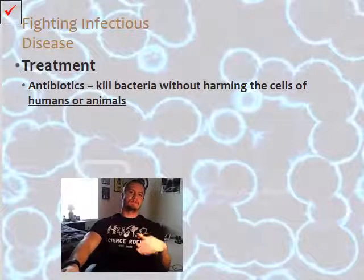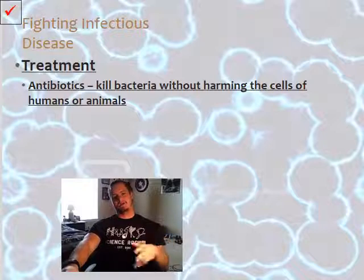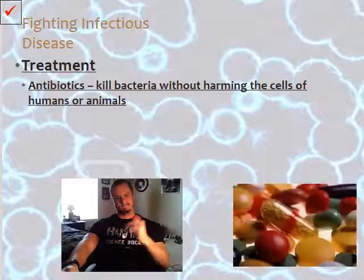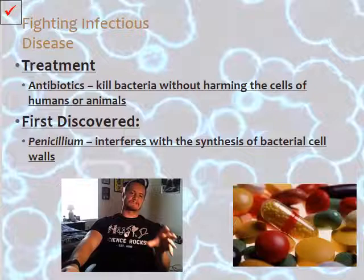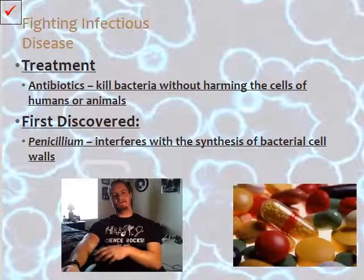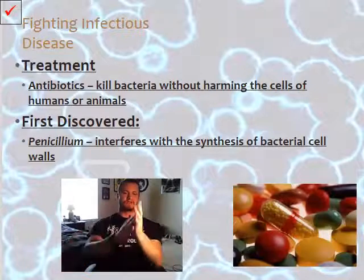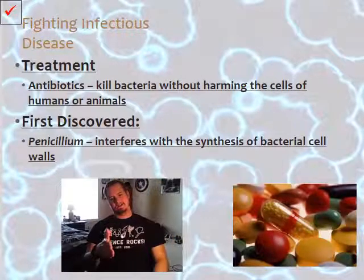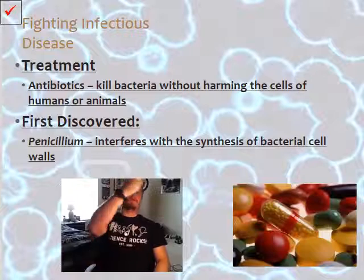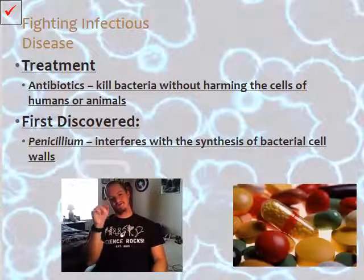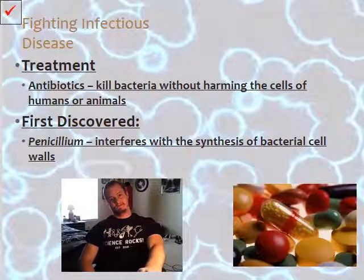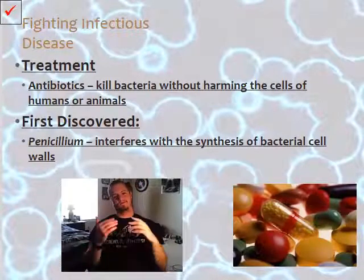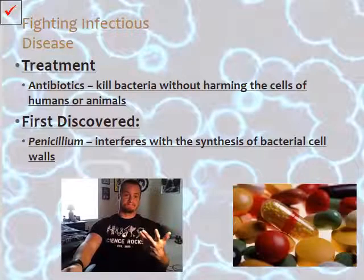Ways to fight infectious disease: antibiotics. Antibiotics kill bacteria without harming the cells of humans or animals — they target the bacteria, find it, and kill it. The first discovered antibiotic is penicillin, which interferes with the synthesis of bacterial cell walls. Think of the bacteria as a house: penicillin removes all the nails and fasteners holding it together, and the house falls in on itself. The bacterial cell essentially oozes out and dies.